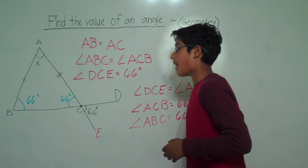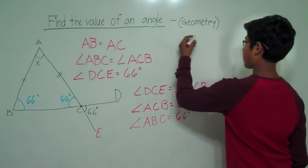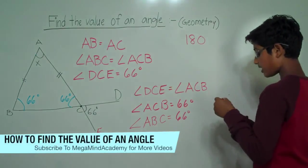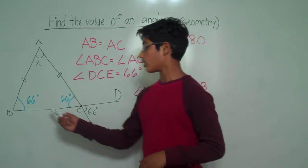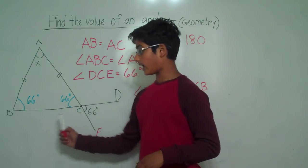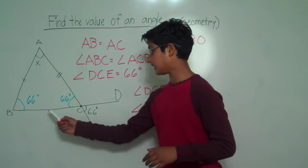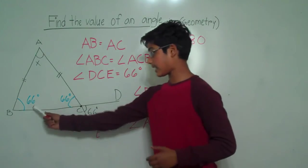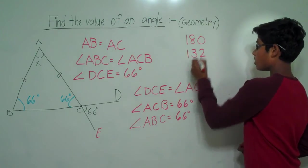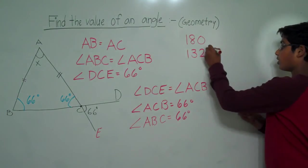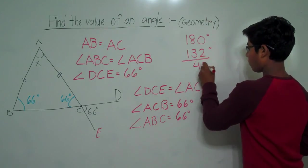Now we need to find the value of angle X. We know that the total angle measurement in a triangle is 180 degrees. So to find the measurement of angle X, we subtract the total value of angle ABC and angle ACB. The total value is 66 plus 66, which equals 132. So we subtract 132 degrees from 180 degrees, which equals 48 degrees.